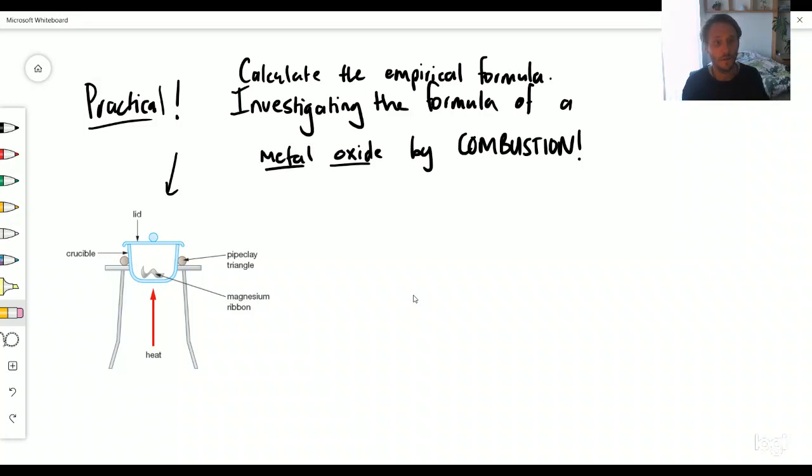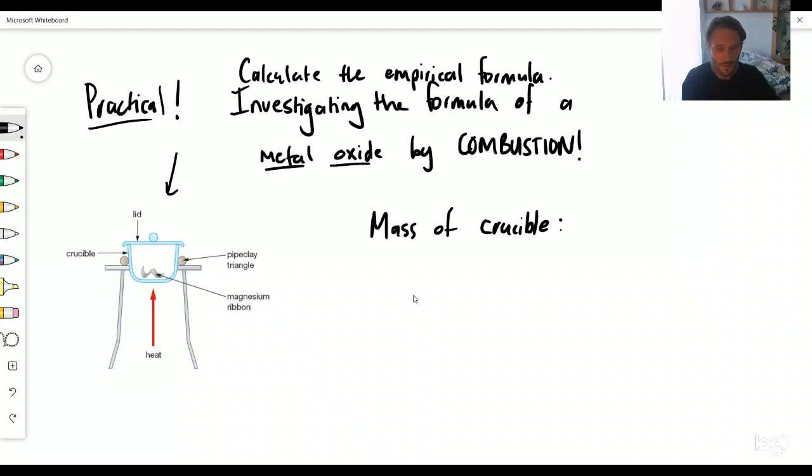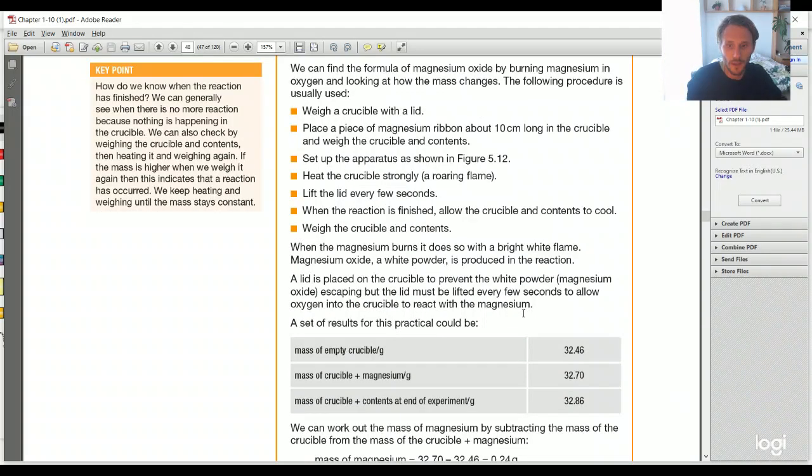So how do we do this experiment? Well we do it like that, but then what are the calculations? The first thing you need to do is you need to find the mass of the crucible itself. So I'm just going to give some random examples. The mass of the crucible that I weighed, let's say the mass is 32.46 grams - that's an empty crucible with nothing inside of it.